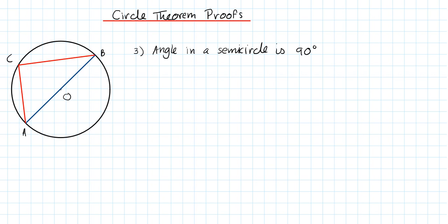So we can see angle AOB is a straight line. So angle AOB is 180 degrees over here. So the reason for this is angle on a straight line is 90 degrees.